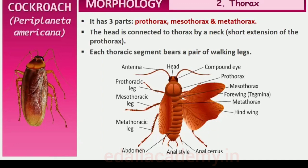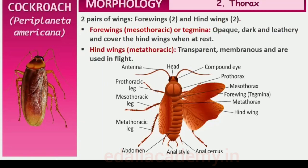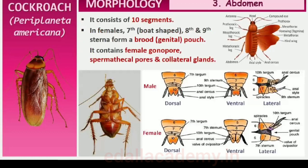The thorax consists of three parts: prothorax, mesothorax and metathorax. The head is connected with the thorax by a short extension of the prothorax known as the neck. Each thoracic segment bears a pair of walking legs. The first pair of wings arises from the mesothorax and the second pair from the metathorax. The forewings (mesothoracic), called tegmina, are opaque, dark and leathery and cover the hind wings when at rest. The hind wings are transparent, membranous and are used in flight.